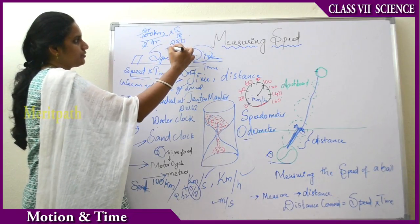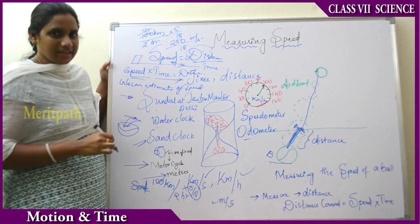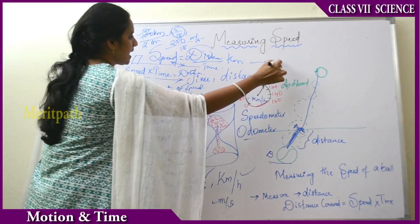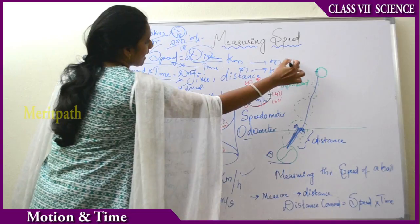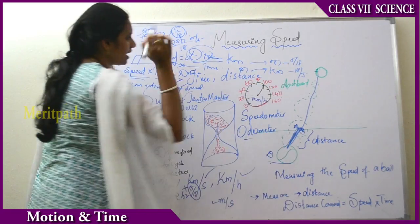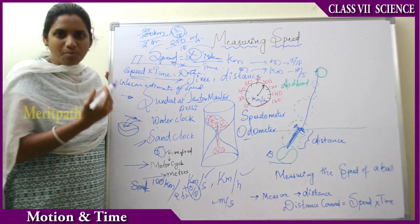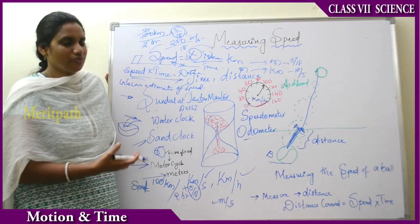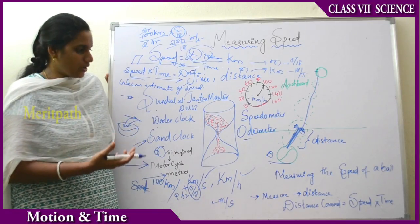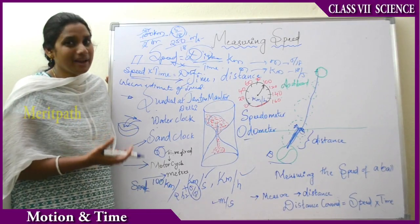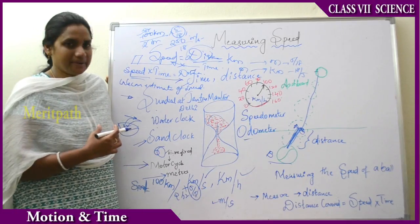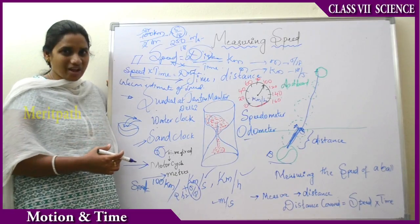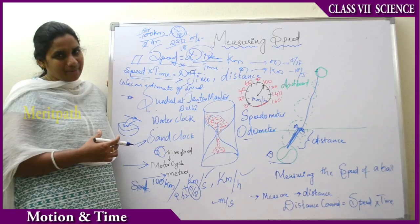So we use 5/18 as the conversion factor for kilometers per hour to meters per second. And conversely, to convert from meters per second to kilometers per hour, we multiply by 18/5. I hope we are clear with the conversion factors and how to measure the speed with a simple activity and the three older methods used to find out speed, and the two meters used — speedometer and odometer. Now we will see the measurement of time and distance with the help of graphical representation using different types of graphs consisting of pie charts, bar diagrams, and line diagrams.